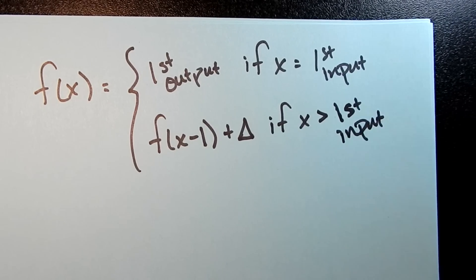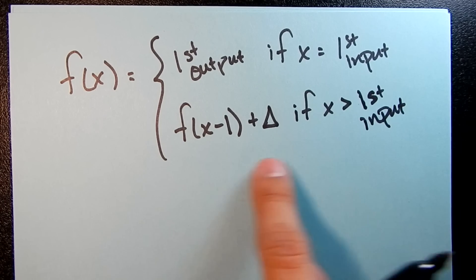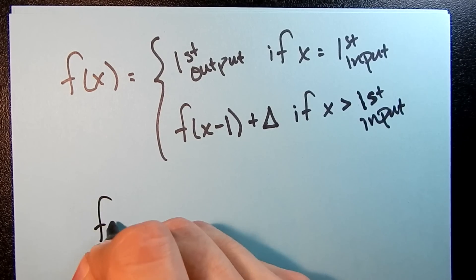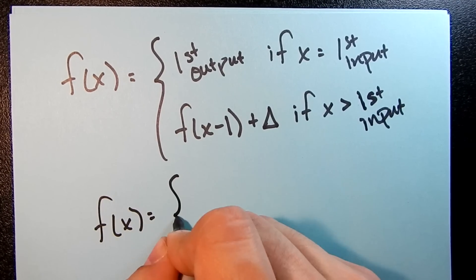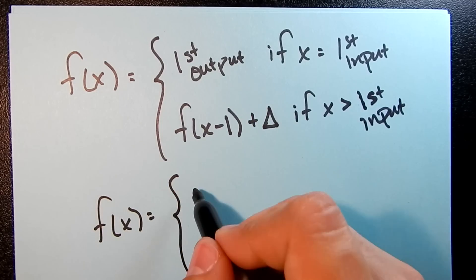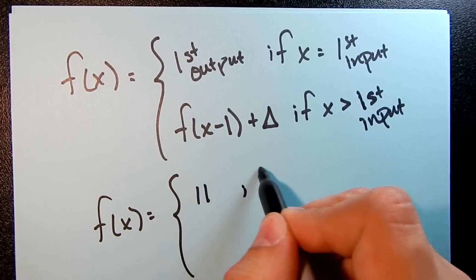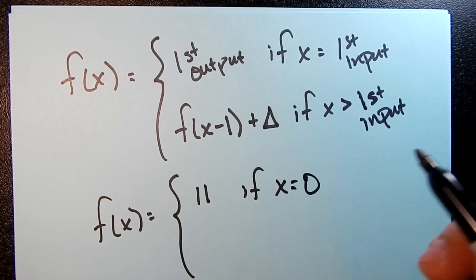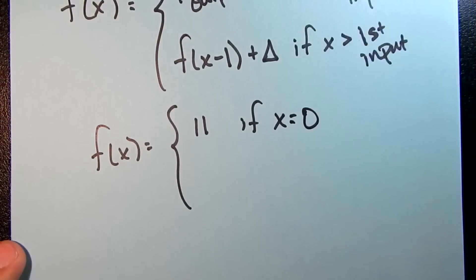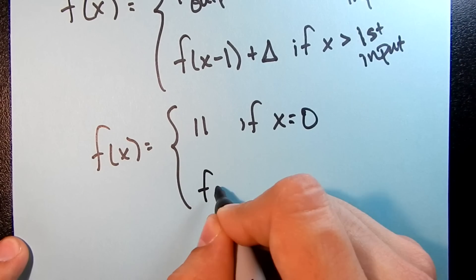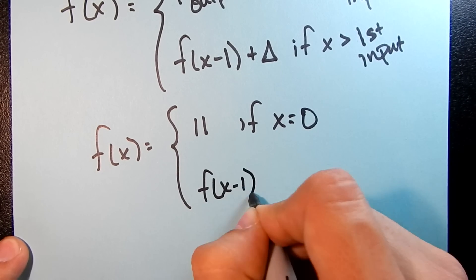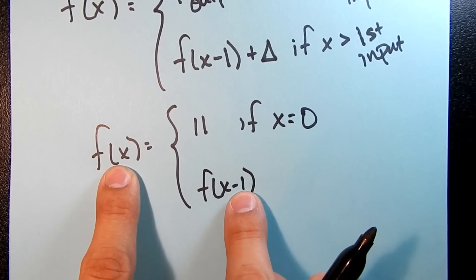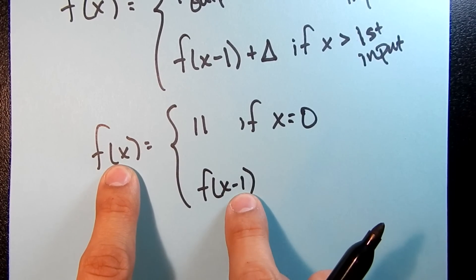So it always follows this format. So for our function here, our first output, let me write this down here. So f(x) is, our first output was 11. If x was our first input, which is 0, then we have the next piece. So f(x-1). Now, what this is saying here, if I'm trying to find the next input, this is just saying, do the x minus 1 output. x minus 1 being the previous one, the one higher on the list.